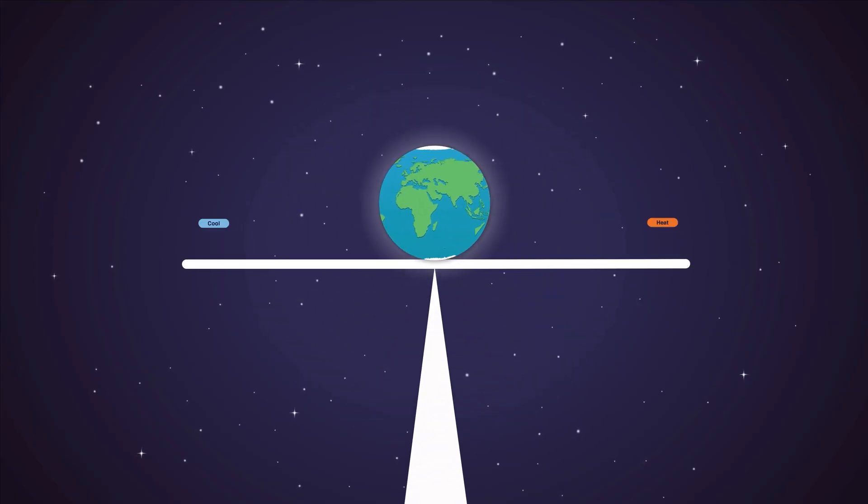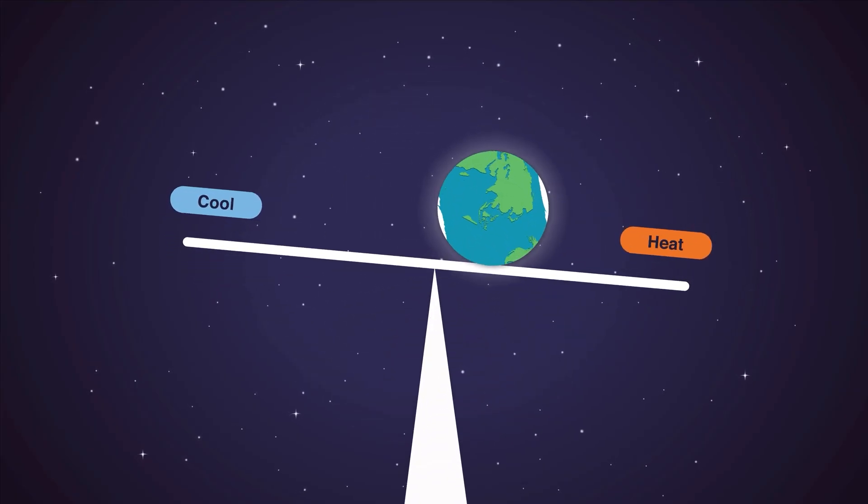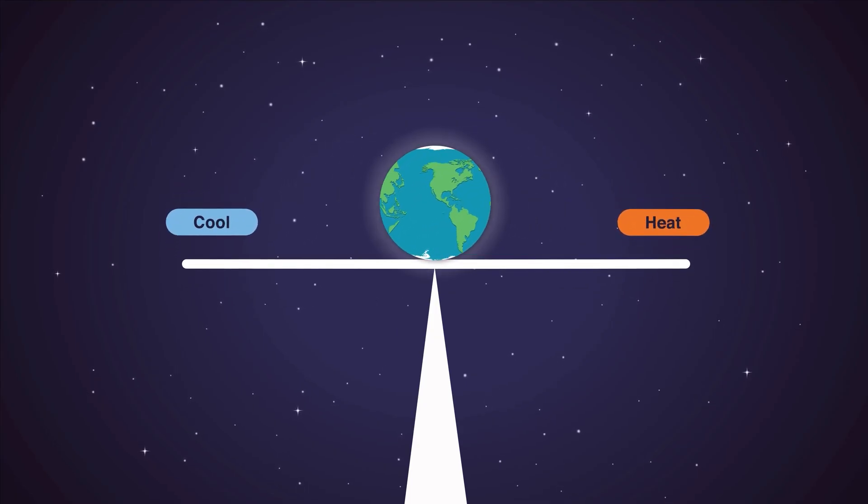Eventually, this feedback mechanism can move the climate system towards tipping points, where parts of the Earth's systems are no longer as effective at balancing the energy budget in order to keep the climate stable.